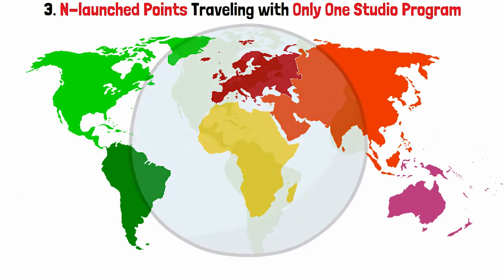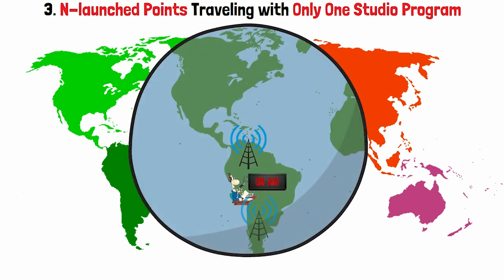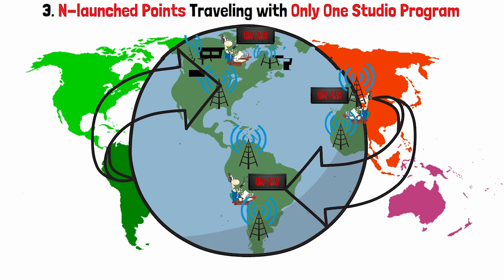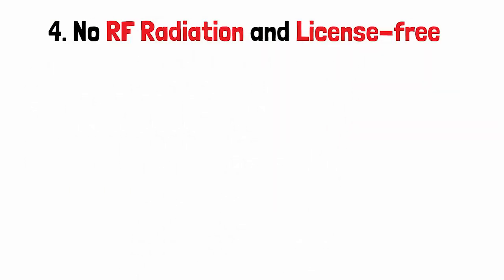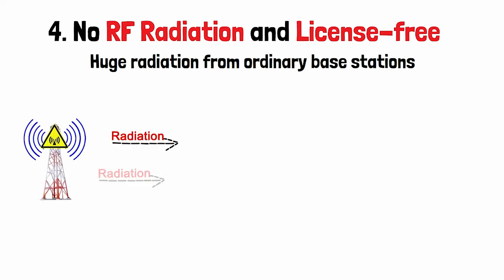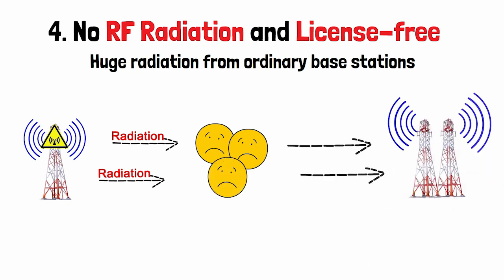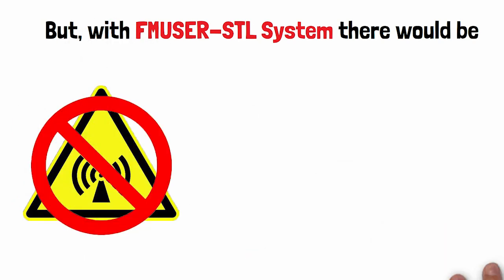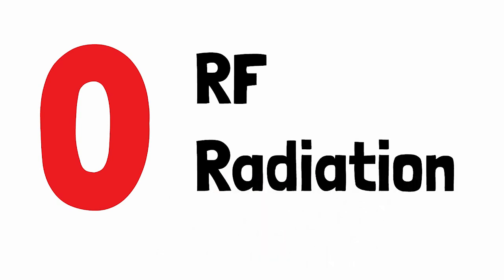What's more, the FM User STL system can help you transmit program signals to radio transmitting points all over the country in real time with just an FM radio frequency license, a well-designed broadcasting studio, and some good programs. Furthermore, the FM User STL system is more suitable for broadcasting stations due to its outstanding ability to avoid radiation. In densely populated communities, fewer people want to see huge containers towering over surrounding rooftops, and FM User STL system can effectively avoid RF radiation.